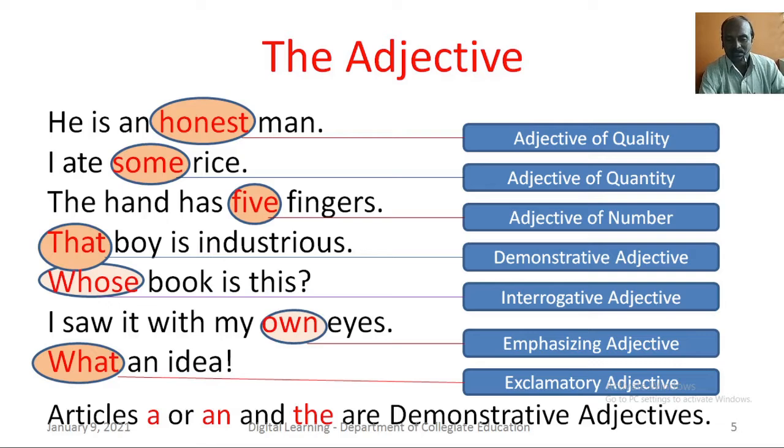Articles — a, an and the — are demonstrative adjectives.